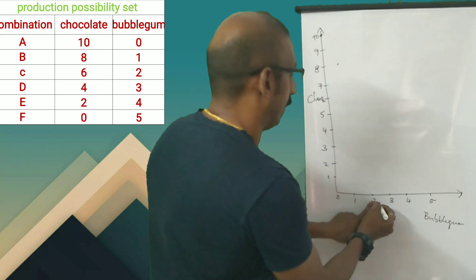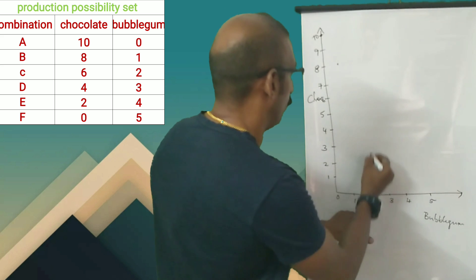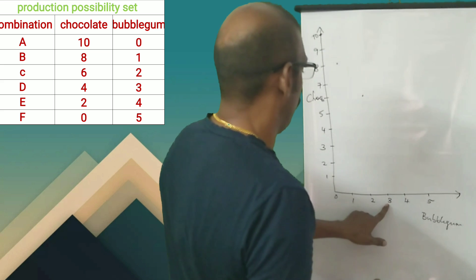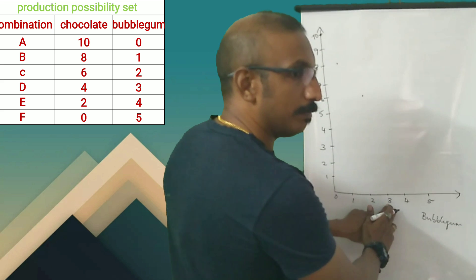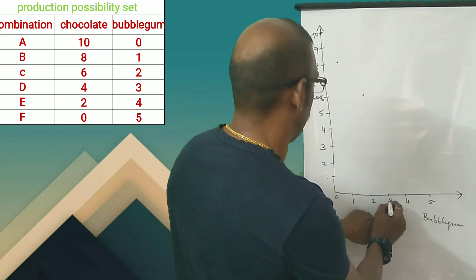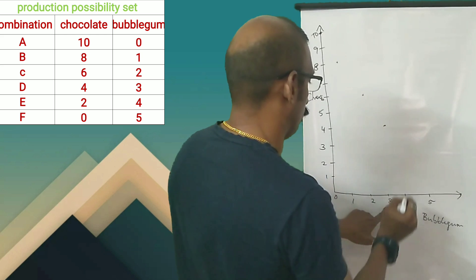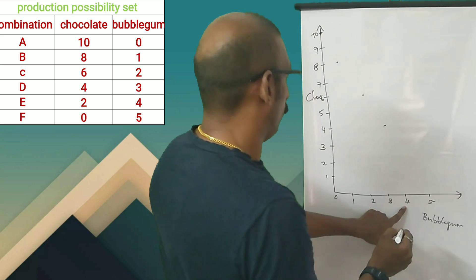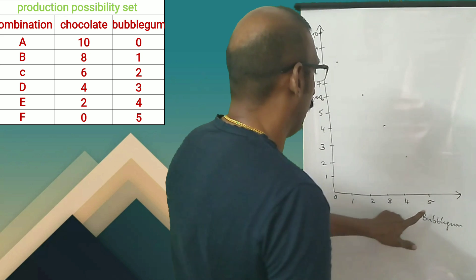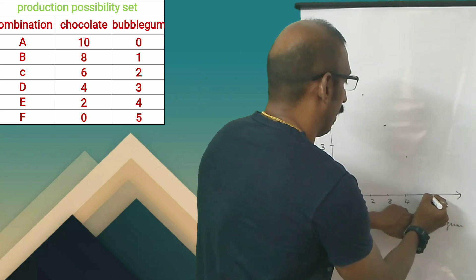In the case of 2, if we add 2 bubble gum, we reduce 2 chocolates and mark it. If we add 3 bubble gum, we reduce 4 chocolates and mark 3. If we add 4, then we mark 4. If we add 5 bubble gum, then we mark 5.